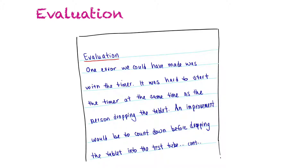That's how you write a lab report. One thing worth noting is that all sections should be given a title and underlined to keep it neat for the reader. We tend to write them in order: purpose, hypothesis, variables, materials, procedure, observations, analysis, and finally conclusion and evaluation. You need to write a lab report in the order that things happen.